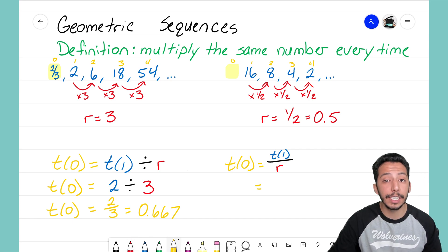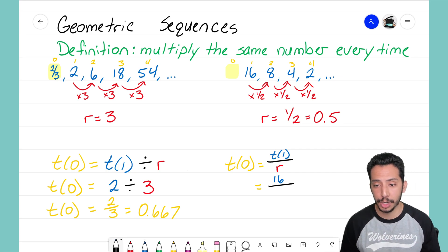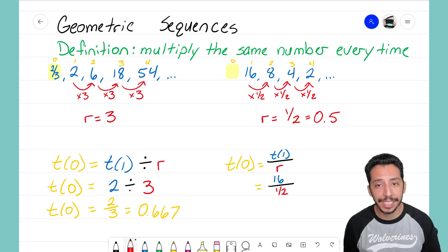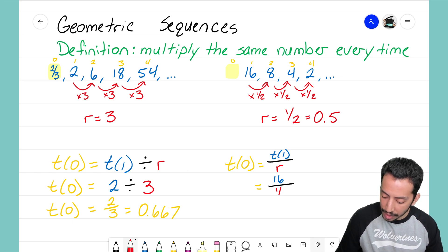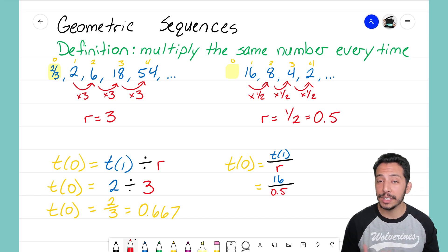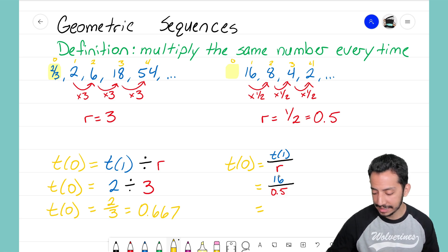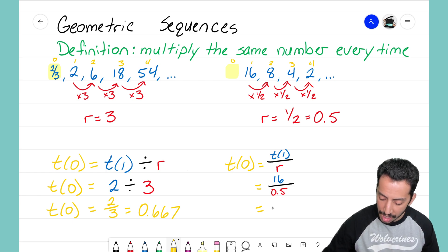Same idea here. To find t(0) we need to take the first term, t(1), and divide by the common ratio. I'm writing this as a fraction - t(1) divided by r. Looking at this sequence, I see that t(1) is 16. I take 16 and divide by the common ratio. Since I'm doing this as a fraction, I'm going to use the decimal version and write 0.5 instead of one half.